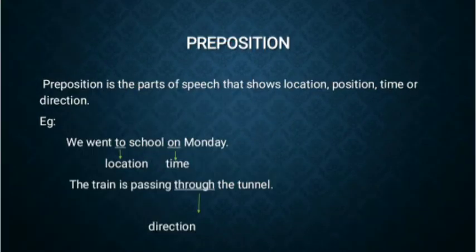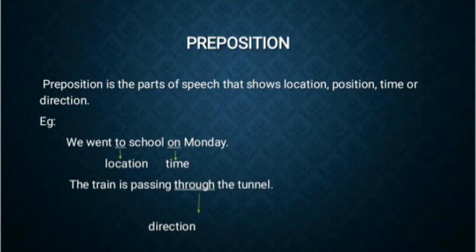Then comes the sixth part of speech, which is preposition. From the word preposition itself, we can understand it denotes something about the position of a thing. Preposition is the part of speech that shows location, position, time, or direction. For example, 'We went to school on Monday.' Here, the word to tells us the location where we are going, and on tells us the time when the action takes place. Another example: 'The train is passing through the tunnel' — the word through tells us the direction of the train.